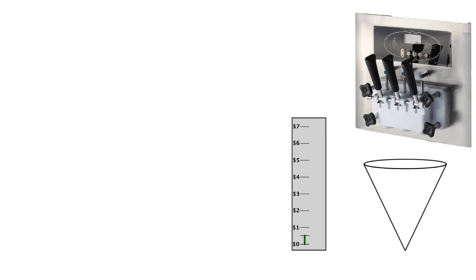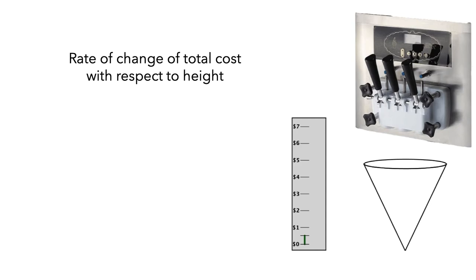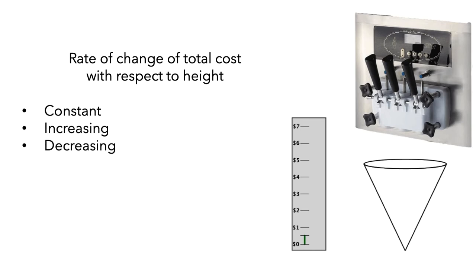In particular, you'll need to determine whether the rate of change of total cost with respect to height of the yogurt is constant, increasing, decreasing, both increasing and decreasing, or something else. I'll start the animation now.